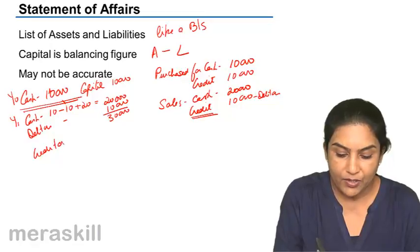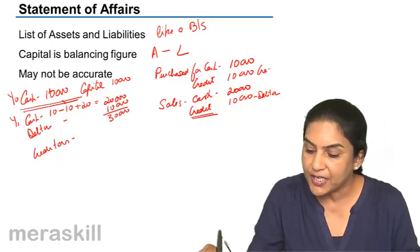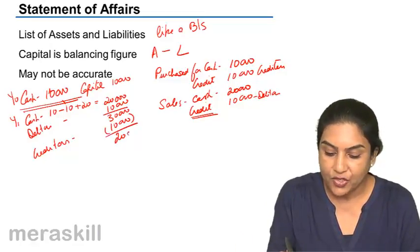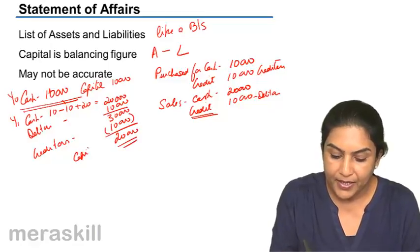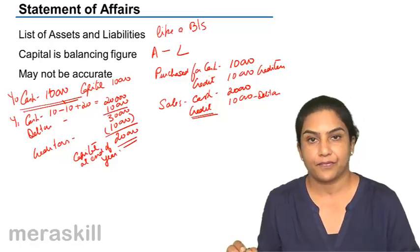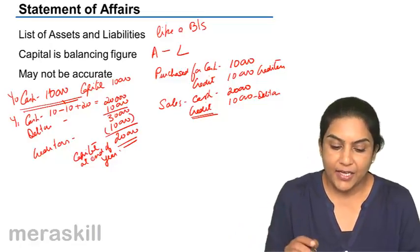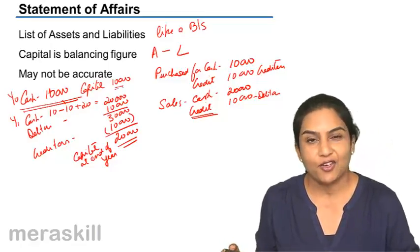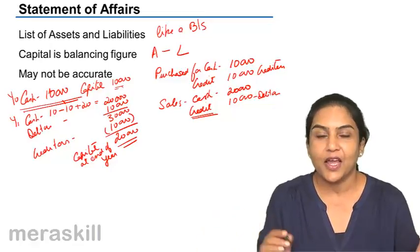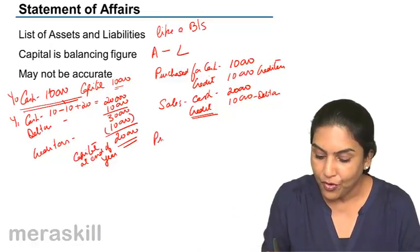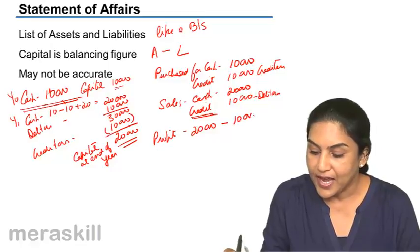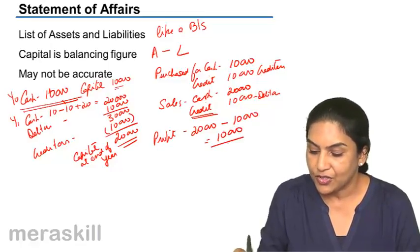On the other side, I owe money to creditors of 10,000 because I purchased on credit. Deducting liabilities, I get 20,000, which is my capital at the end of the year. I started with capital of 10,000 at the beginning and it has grown to 20,000. Therefore my profit is 10,000 — that is closing capital of 20,000 minus opening capital of 10,000.